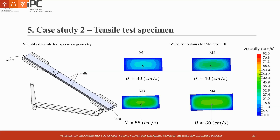Since we were not satisfied with the results given by MoldX3D, we used the commercial software to make a last study. This time we simulated only the central channel of the tensile test specimen with the same initial and boundary conditions and the same material. A mesh refinement study was also employed to understand how the velocity values evolve with mesh refinement. In the end, we noticed that with mesh refinement, the velocity values and contours evolve to approximate the ones obtained with Open-Inge MoldSim in the previous study.